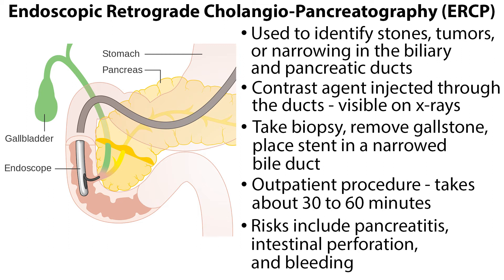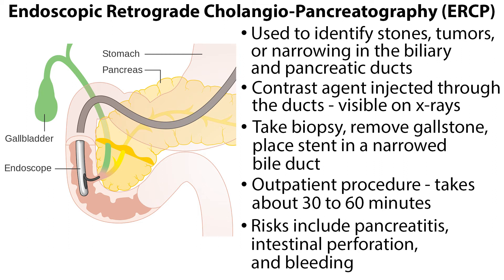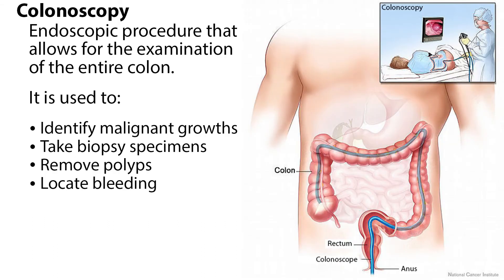The risks of ERCP include pancreatitis, intestinal perforation, and bleeding. Another technique used to look at the gallbladder, biliary ducts, and pancreatic duct is the Magnetic Resonance Cholangiopancreatography, or MRCP. However, it is a non-invasive procedure that uses magnetic resonance imaging to see if gallstones are lodged in any ducts surrounding the gallbladder. A colonoscopy is an endoscopic procedure that allows for the examination of the entire colon. It is used to help identify malignant growths, take biopsy specimens, remove polyps, and locate bleeding.